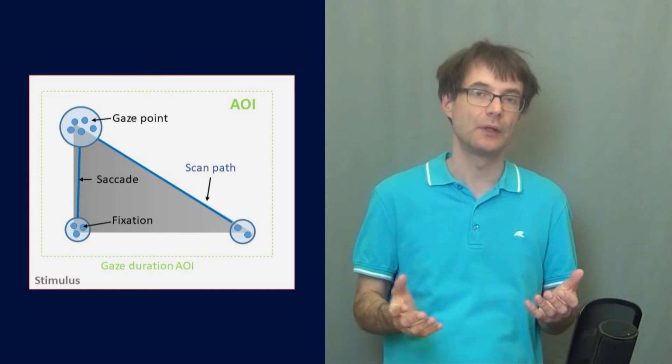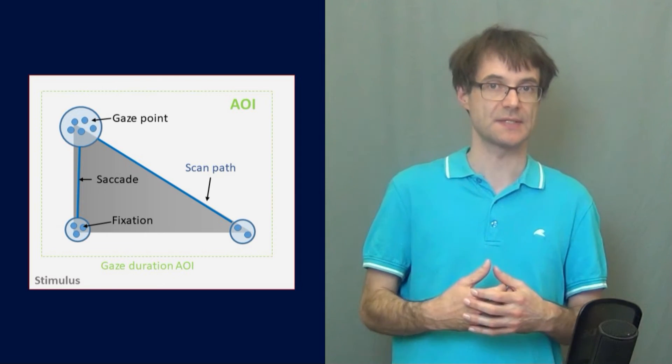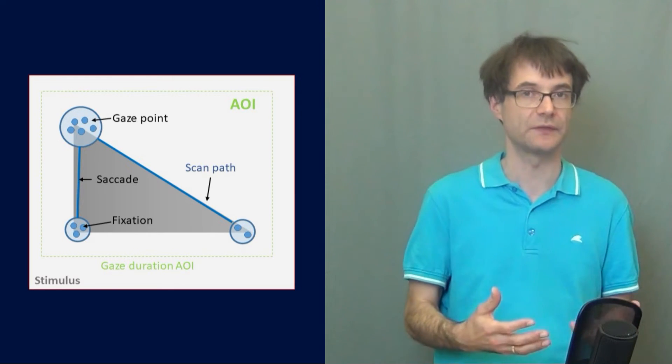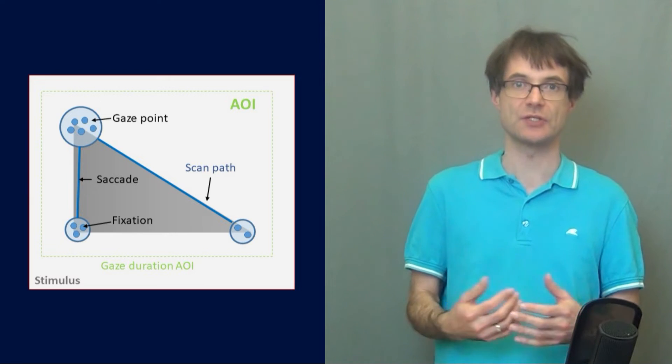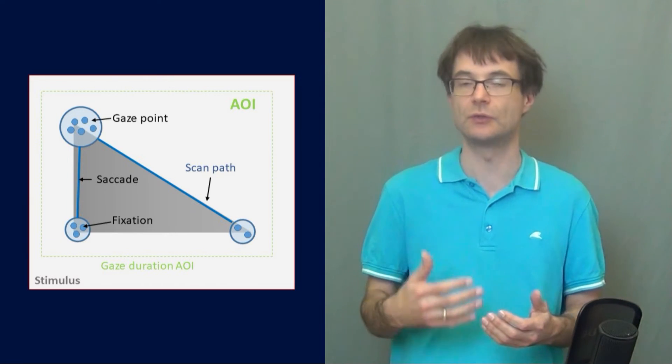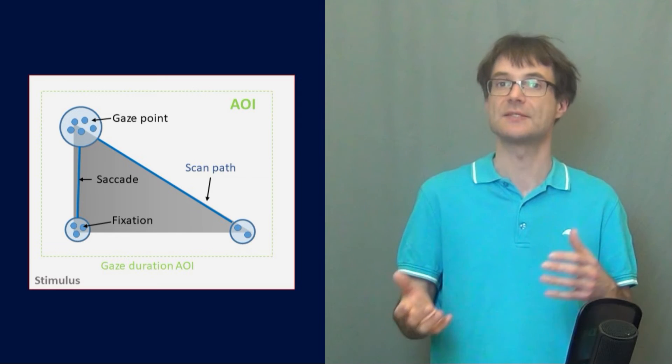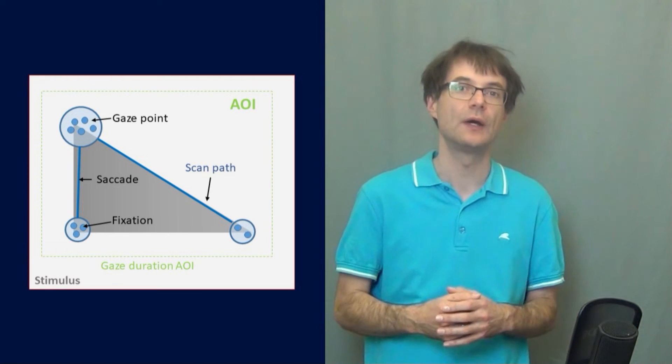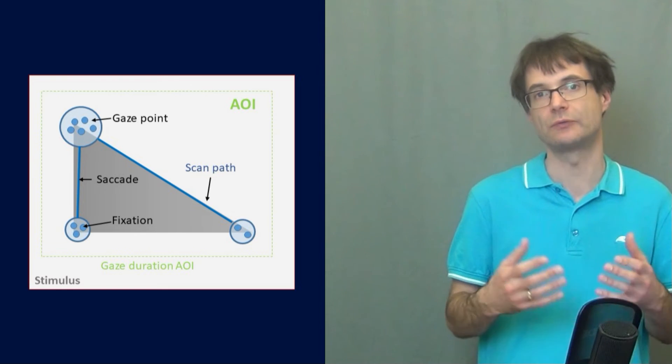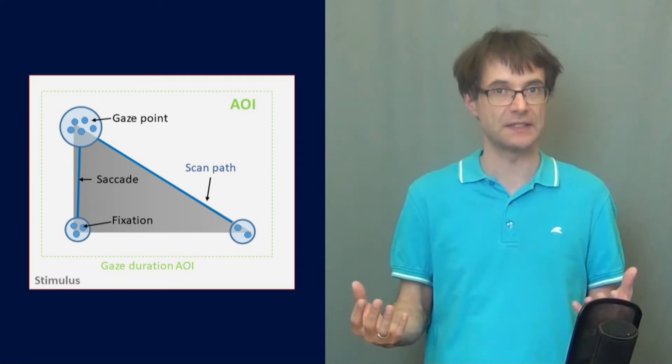So for example, you find out that only gaze points are recorded in good quality. And for whatever reasons, the fixation detection algorithm is not working correctly and you cannot compute fixations based on the gaze points. If this is the case, you have to know that gaze points do not represent the visual perception of a scene.